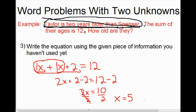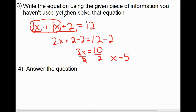Now we have to ask ourselves what that means. If you recall at the beginning, we let Spencer's age be X. Since the question is asked in English, we really have to give the answer in English. So our final step is to answer the question by translating back from math into English. Therefore, Spencer is 5 years old. And since Taylor is 2 years older than Spencer, Taylor has to be 7 years old.